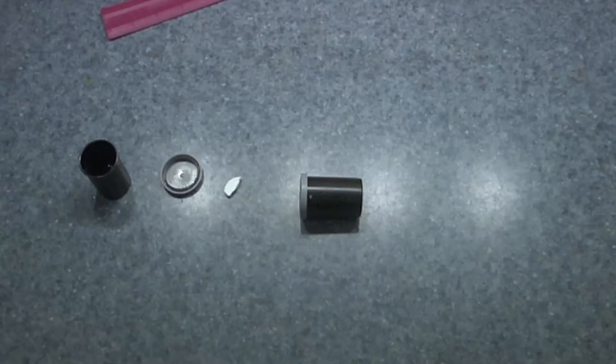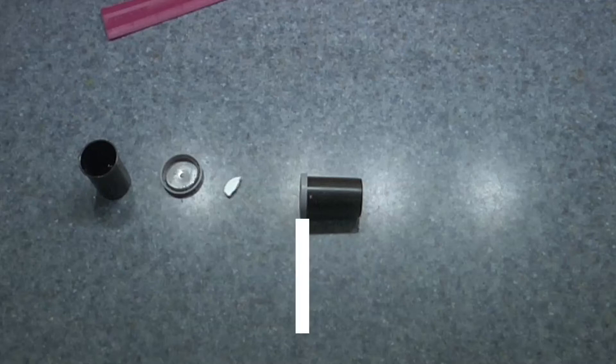Fill both canisters about half full with water. You'll want to have the same amount in each canister. Cap one of the canisters and lay it on its side so the cap is against the mark.